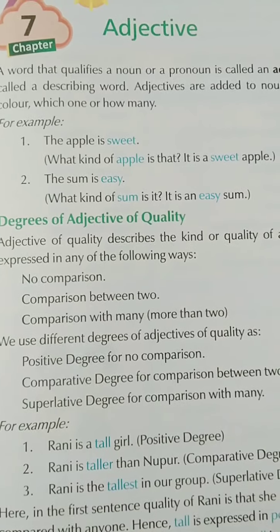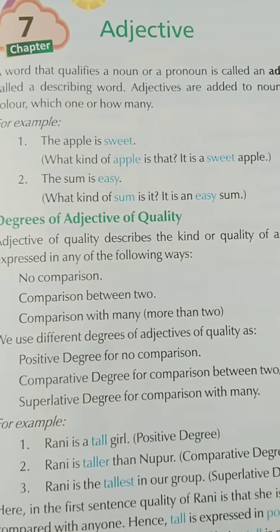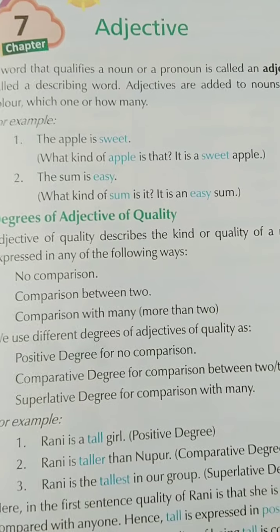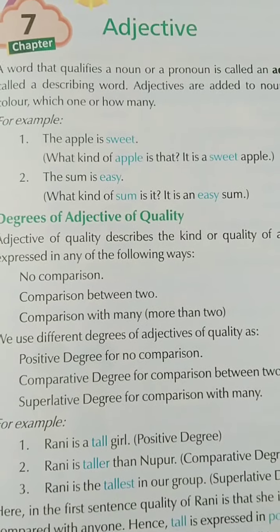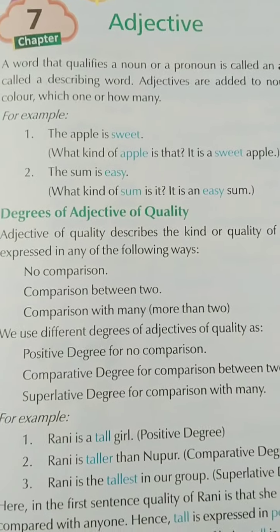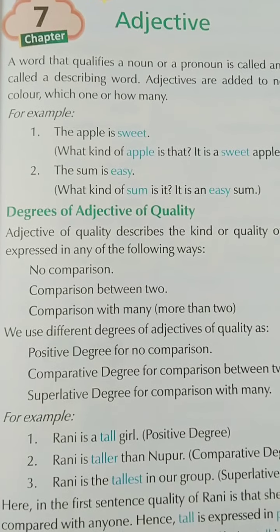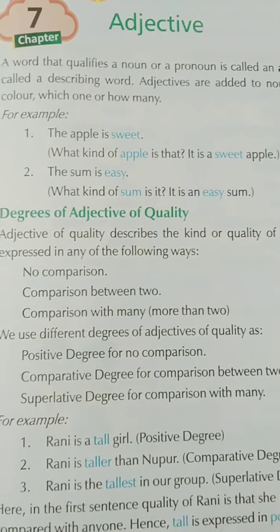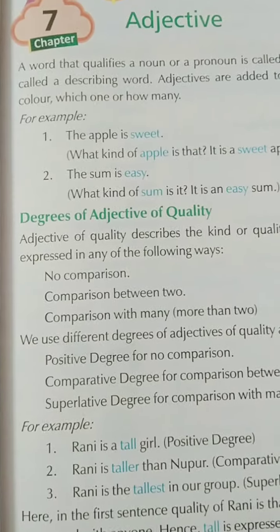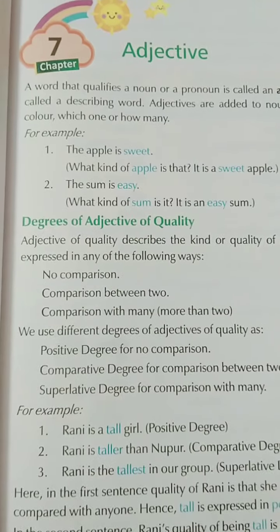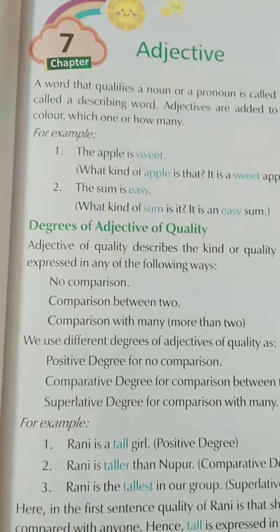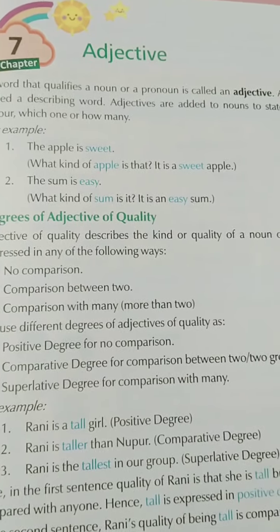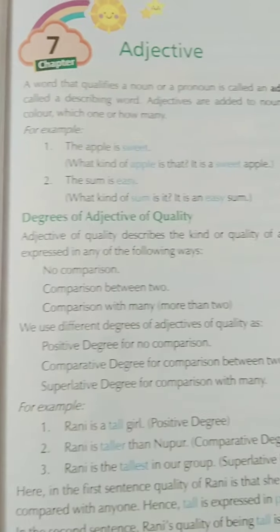Let us read an example: the apple is sweet — what kind of apple is that? It is a sweet apple. So the adjective is telling about the quality of a noun or pronoun — it tells the quality of a person or thing. The sum is easy — what kind of sum is it? It's easy. So it tells about the quality.